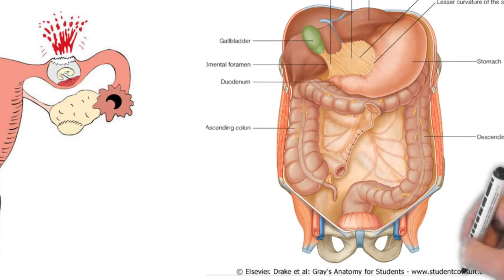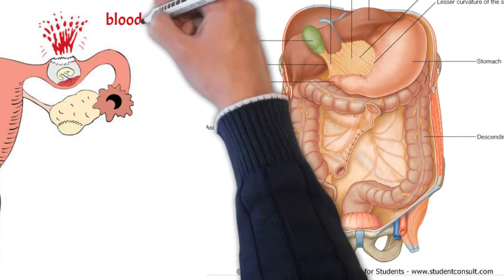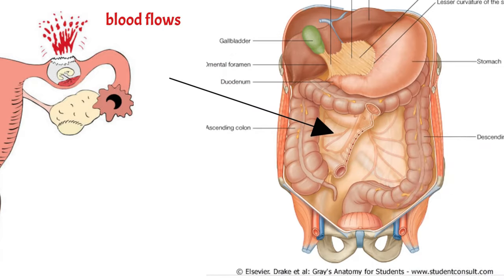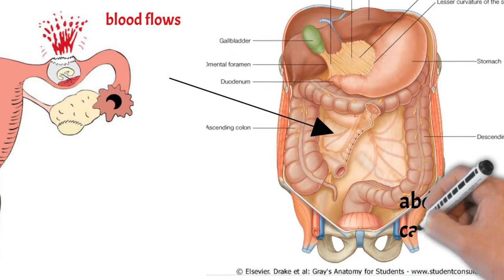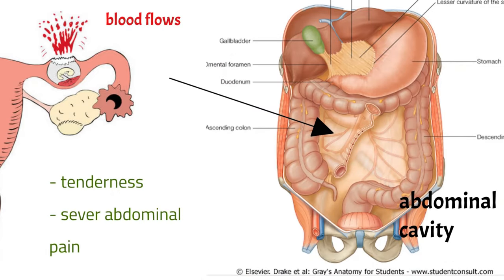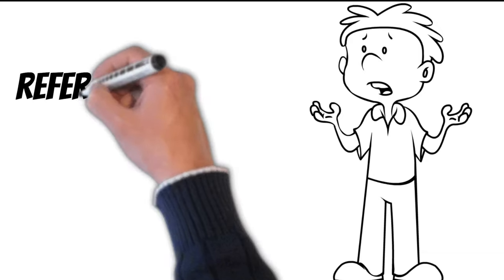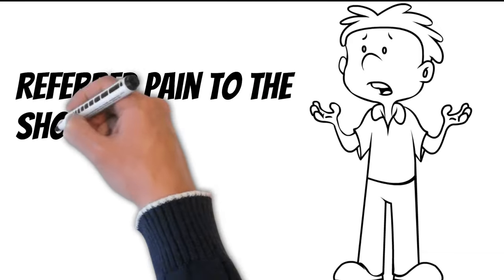The blood may rapidly ascend to the abdominal peritoneal cavity, causing tenderness and severe abdominal pain. Irritation of the subdiaphragmatic peritoneum, which is supplied by the phrenic nerve (C3, C4, C5), may cause referred pain to the shoulder skin, which is supplied by a nerve with common roots — the supraclavicular nerve (C3, C4).